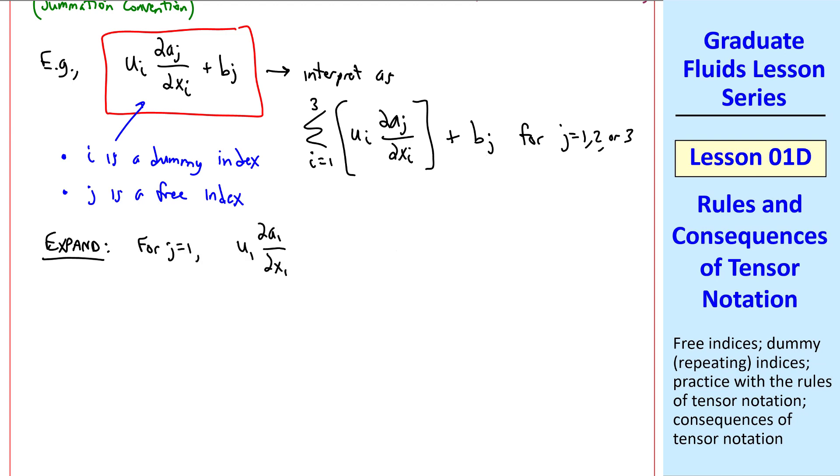For j equal 1, we have u1 del a1 del x1. That's the term when i equal 1, but we have to add a second term when i equal 2, and a third term when i equal 3, and then we add our b1 where j is 1 in this line. This expression represents three separate expressions. One for j equal 1, one for j equal 2, and one for j equal 3.